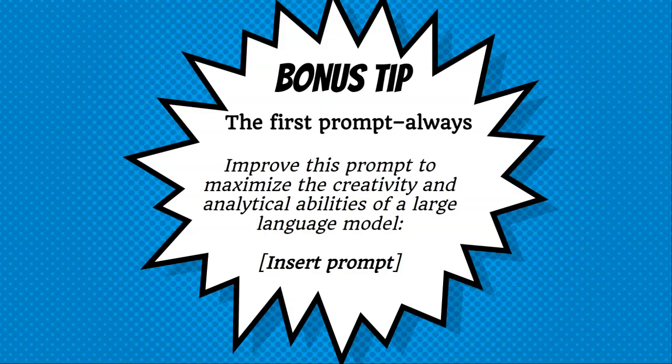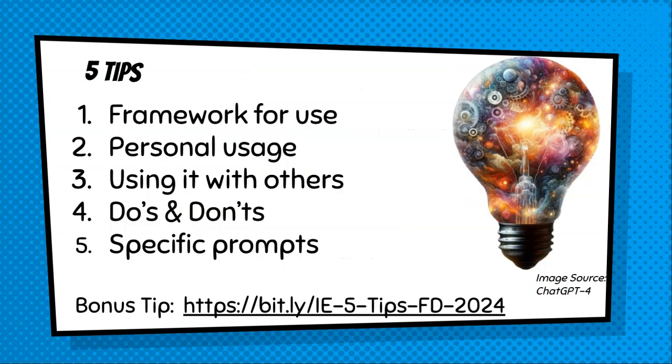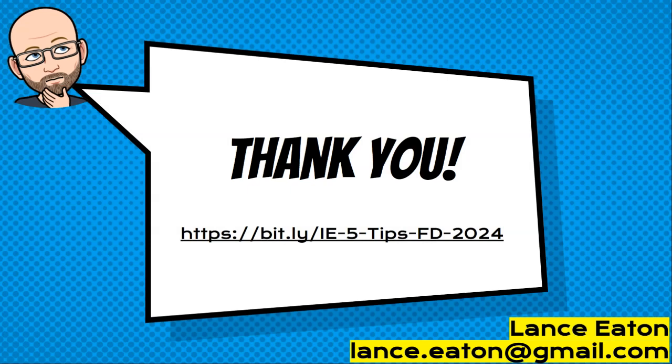A final bonus tip, which I already touched on: the first question to ask any generative AI should always be asking it to improve the actual question. I usually start with: 'Improve this prompt to maximize the creativity and analytical abilities of a large language model,' and then insert the prompt. The new prompt that the AI provides is the prompt that I use, and I always get better results when I do this. So those are five tips from this session — we've covered a lot and it's really just the tip of the iceberg. Definitely dive into that resource document, start to play with it, build upon it, and share with others. Thank you all so much.